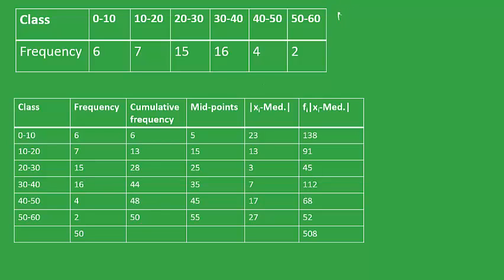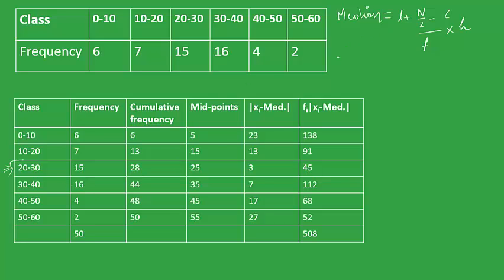To calculate the median, the formula is: median equals l plus (n/2 minus c) upon f, into h. Here, l is the lower limit of the interval whose cumulative frequency is just greater than n/2. So n/2 is 25, and this particular interval has the cumulative frequency just greater than 25. So l is the lower limit of this interval.